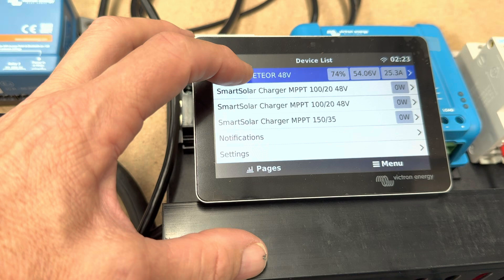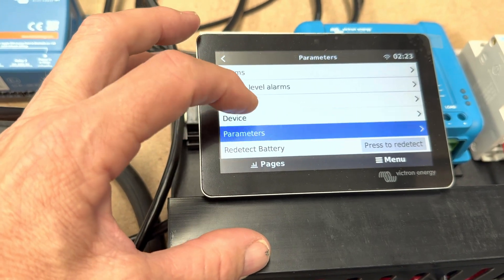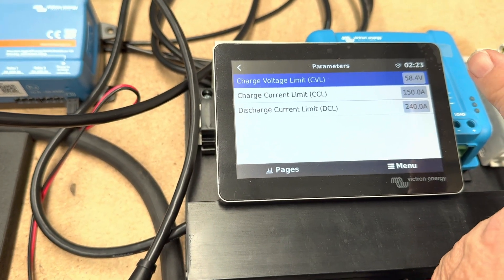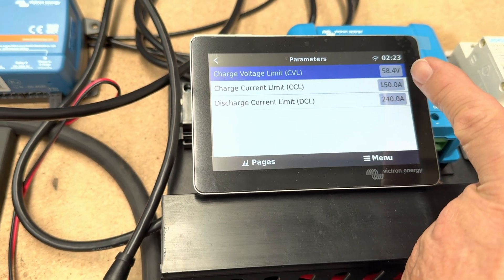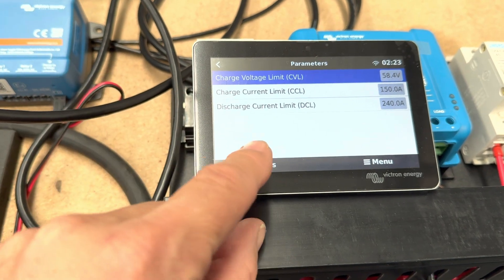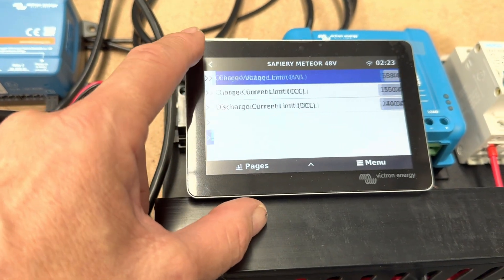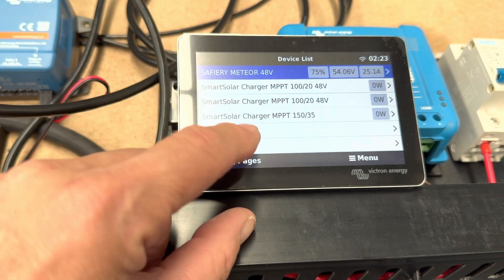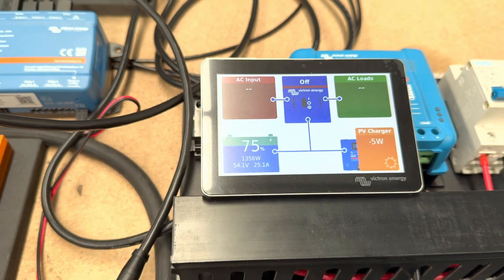There's the Meteor battery and if I go down here into parameters, you can see we've got the charge voltage limit here and we've got the charge current limit here, 150 amps. The batteries over there are suitable for 150 amps and that's the charge limit that we've got on it and that's the power coming in.